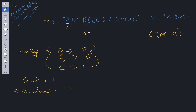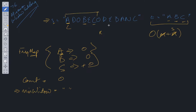Now count equals zero — we've found all occurrences of A, B, and C. We have the substring 'ADOBEC' (slicing from left to right, non-inclusive). We found a potential solution and need to update the minimum window. We also need a len variable initialized to infinity, so the first substring found will always update the minimum window. We update the minimum window to 'ADOBEC'.